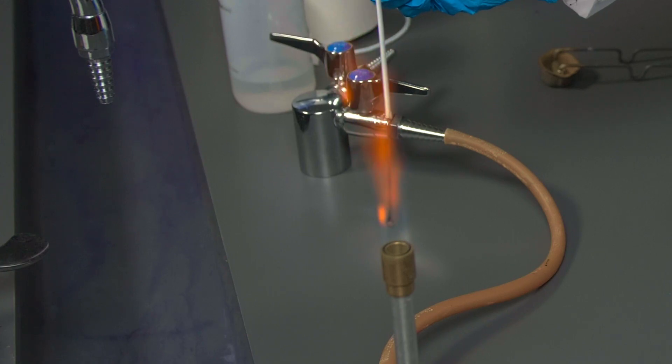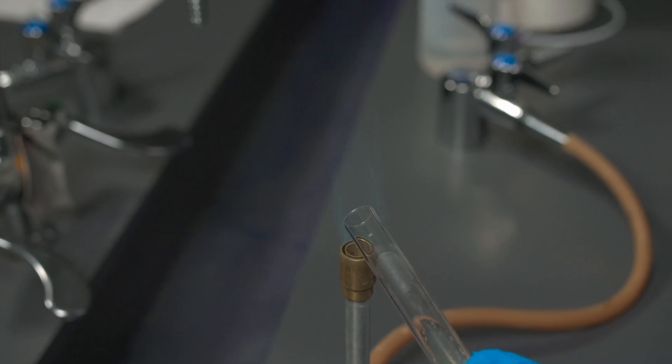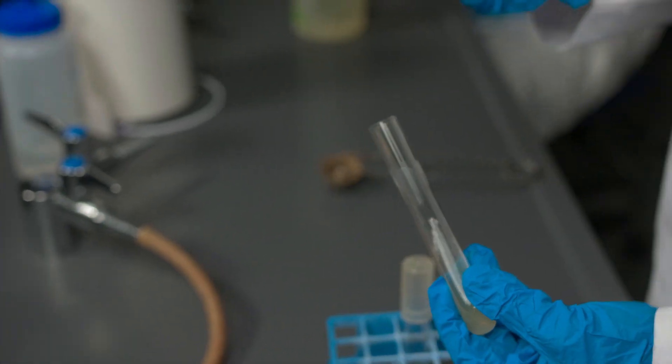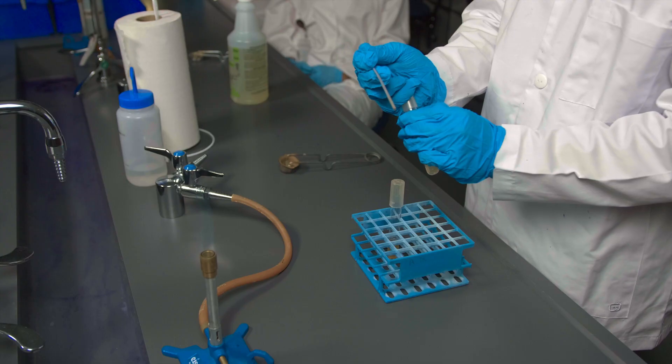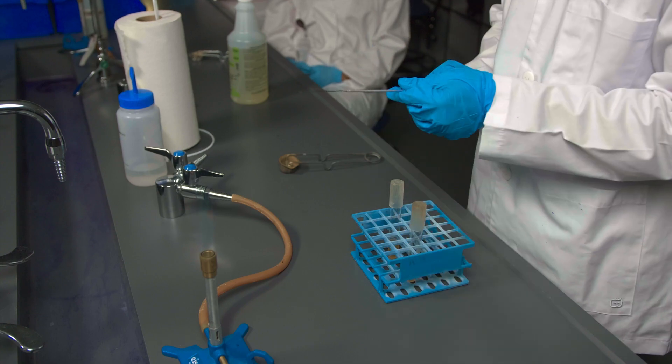Once done, remove the loop and flame it thoroughly. Also, flame the rim of the slant. Then, place the cap back on the slant and put it back in the test tube rack.